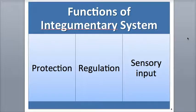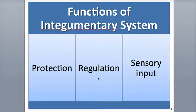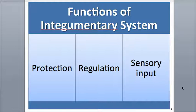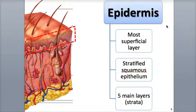The integumentary system also carries out a diverse array of functions, including protection — protecting the body from the outside external environment. It plays many roles in regulation, such as the regulation of body temperature, because of the highly vascularized nature of the integumentary system. It plays a role in blood storage. It also helps with excretion and absorption of materials. It also plays a big role in sensory input by detecting a variety of cutaneous sensations, such as touch, pressure, and pain.